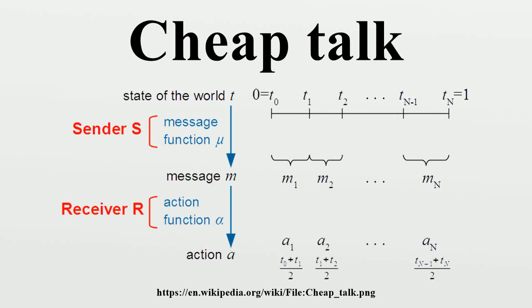In game theory, cheap talk is communication between players which does not directly affect the payoffs of the game. Providing and receiving information is free. This is in contrast to signaling in which sending certain messages may be costly for the sender depending on the state of the world.